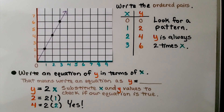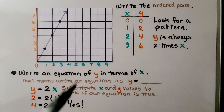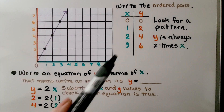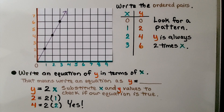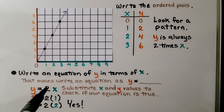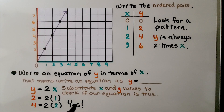Let's try one more example quickly. From the graph: when x is 0, y is 0; when x is 1, y is 2; when x is 2, y is 4; and when x is 3, y is 6. The pattern is y is always 2 times whatever x is, so we write y is equal to 2 times x. We substitute to check: 2 = 2 × 1, yes; 4 = 2 × 2, yes; 6 = 2 × 3, true. We have our equation correct.